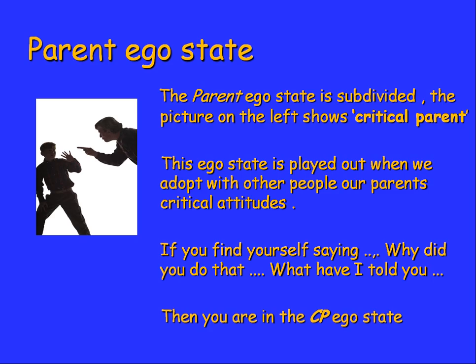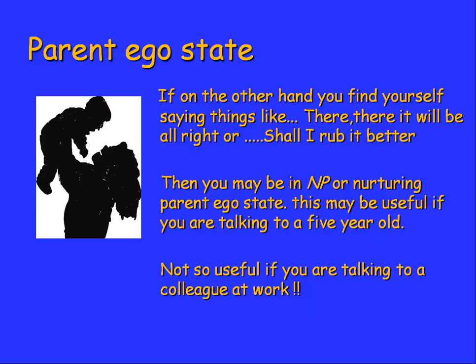If you're doing that, you're in what's called CP — the critical parent ego state. On the other hand, if you find yourself saying things like 'there, there, it'll be alright' or 'shall I rub it better?', you may be in a nurturing parent ego state. This might be useful if you're talking to a five-year-old, but it's not so useful talking to a colleague at work. Imagine banging your knee and a colleague says 'shall I rub your knee better?' — it may not go down too well.